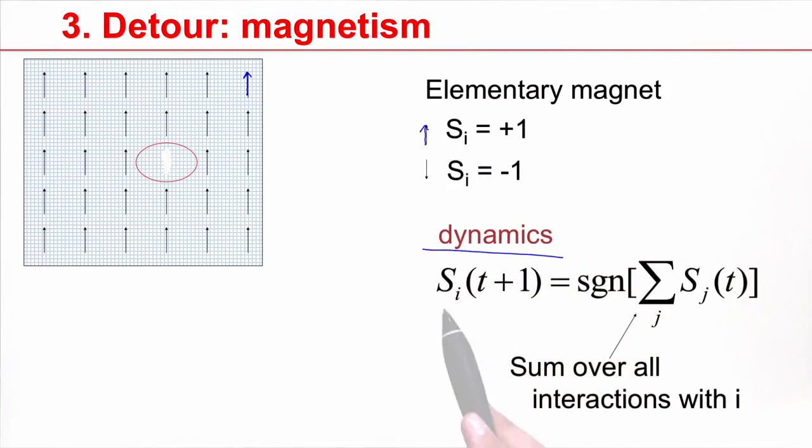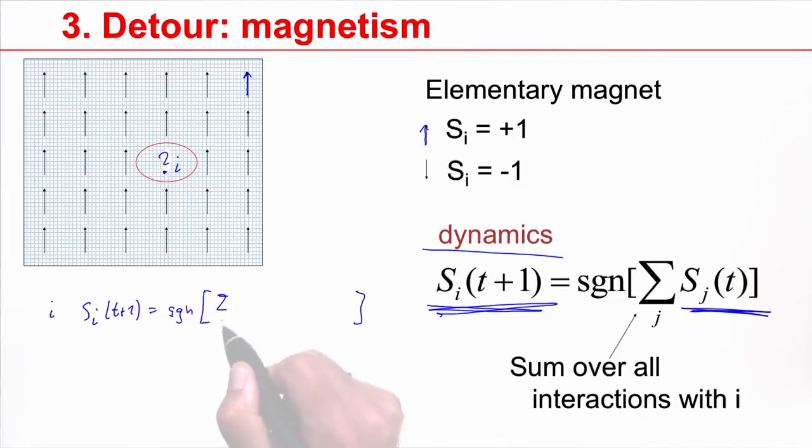These dynamics say that the state at the next time step is given by the interactions with its neighbors. So the question is, what's this needle going to do? This needle at position i has a value s_i at time t plus one, which is the sign of sum over j of the different s_j's. For example, I have here a needle s_j.